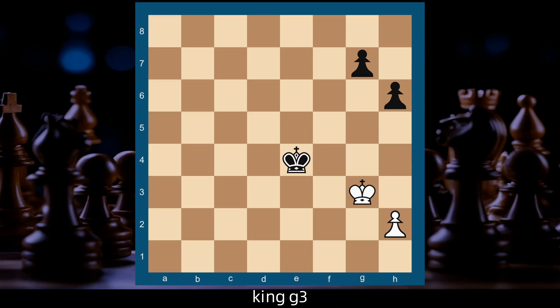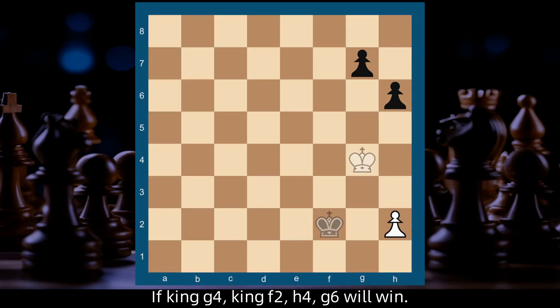King g3, King e3, King g2. If King g4, King f2, h4, g6 will win.